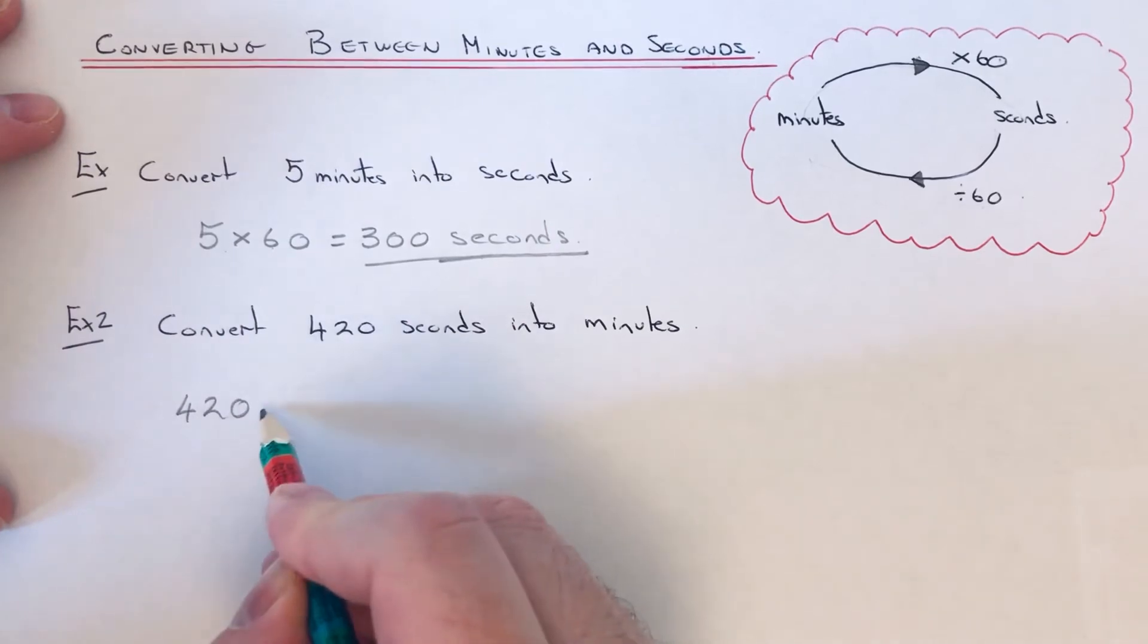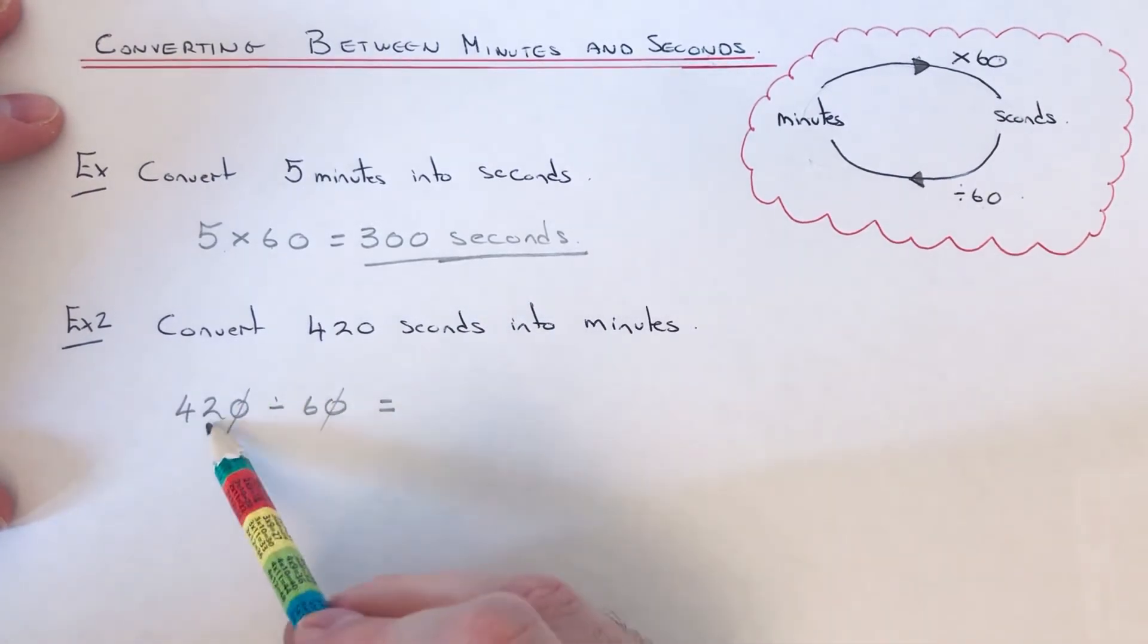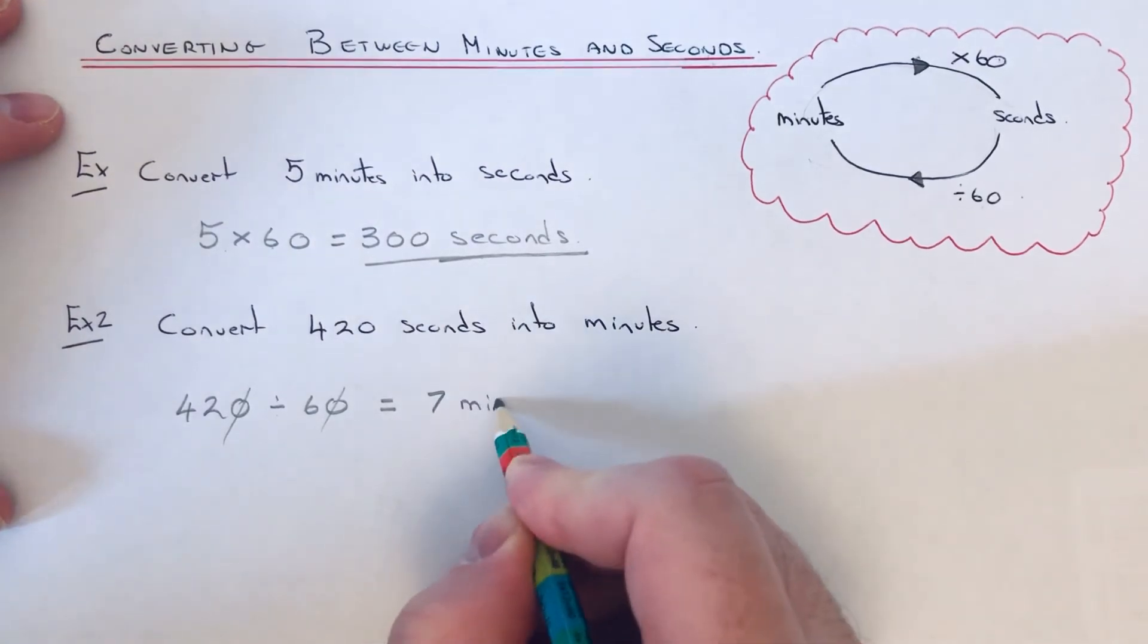So if you write the 420 down first, and we've got to divide by 60, we can cancel out these zeros. 42 divided by 6 is 7, so we get 7 minutes.